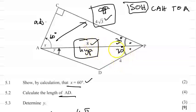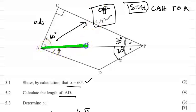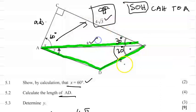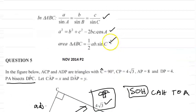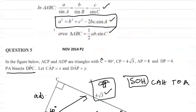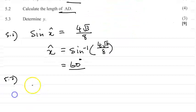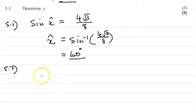So we have two sides — AP = 8 and DP = 4 — and an included angle of 30 degrees. That means we use the cosine rule. We want to find AD, so we write: AD² equals 8² plus 4² minus 2 times 8 times 4 times cos(30°).